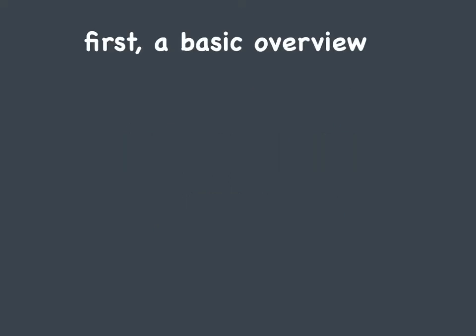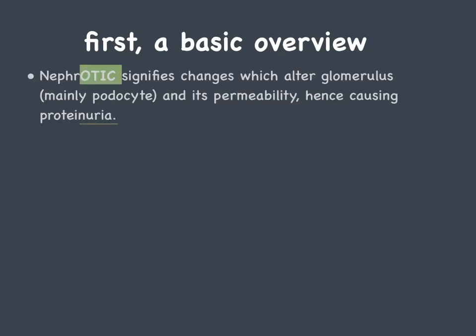I'm going to start off with a basic overview of the general difference between nephrotic and nephritic. Nephrotic signifies changes which alter the glomerulus, mainly podocytes and its permeability, and this is what causes the proteinuria.